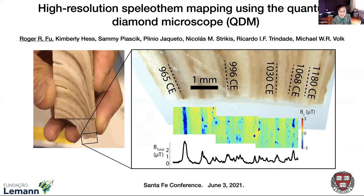We've been using the QDM, or the quantum diamond microscope, to look at some speleothems and creating maps at high resolution that resolves these laminae. I'm going to give an overview of what I think are some of the major questions, or challenges, in terms of interpreting speleothems as a paleoenvironment proxy.